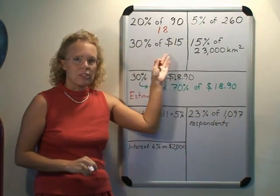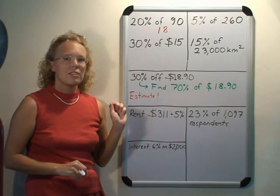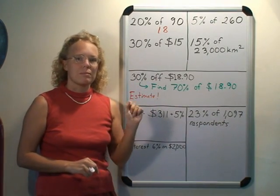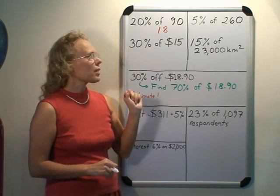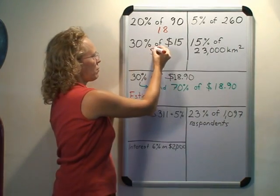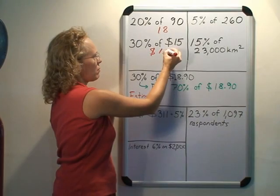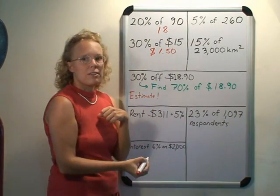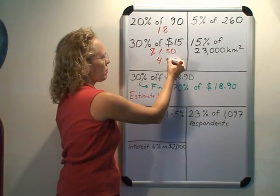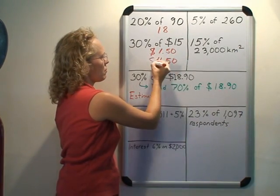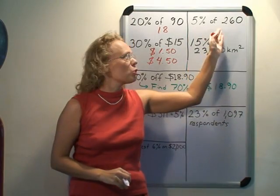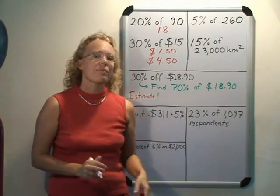30% of $15: first we find 10% of $15 and then multiply by 3. 10% of $15 is $1.50, and 3 times that is $4.50.